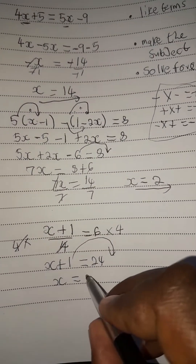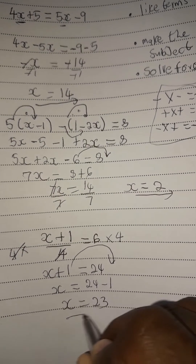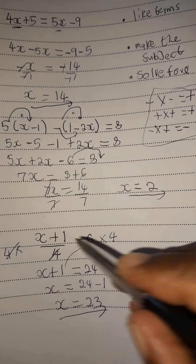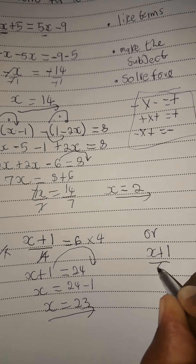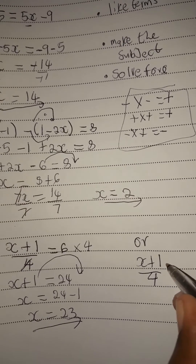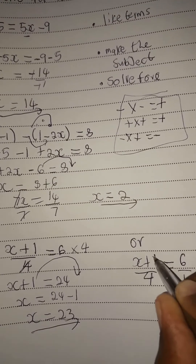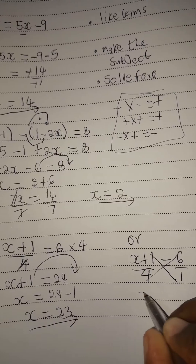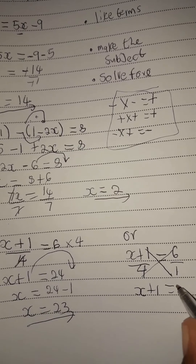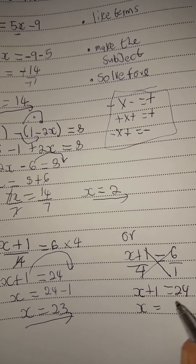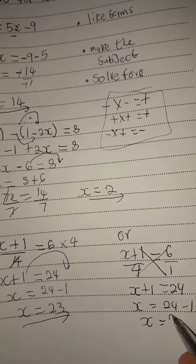If it was minus, it's going to be positive. So in this case, you are going to have 24 minus 1, which means x equals 23. Another method we could use is to say x plus 1 divided by 4, which is 1 over 4, equals 6. So 6 is divisible by 1. From here, we can cross multiply: 1 times x is x, 1 times 1 is 1, and 4 times 6 is 24. So we make x the subject by taking 1 to the other side — it becomes 24 minus 1, equated to 23.